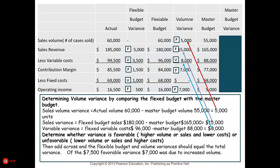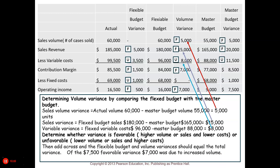Adding across as a check: the sales revenue variance of $5,000 favorable plus the $15,000 favorable volume variance gives you the $20,000 from the master budget. Then the $3,500 from the flexible budget variance plus the $8,000 from the volume variance gives $11,500 — this serves as a check figure confirming that the total master budget variance does add up between the flexible budget variance and the volume variance.